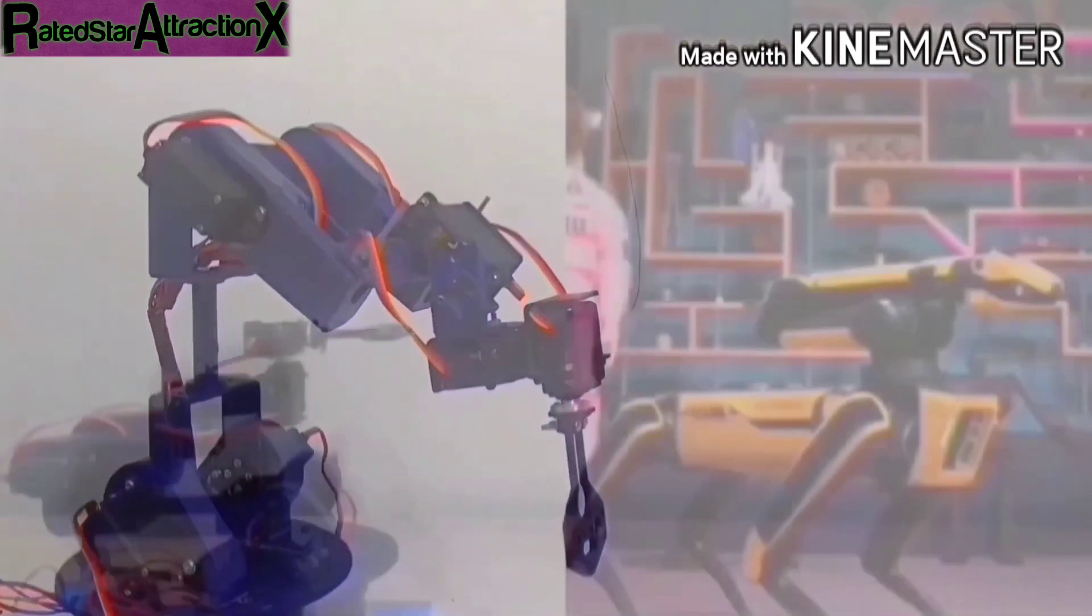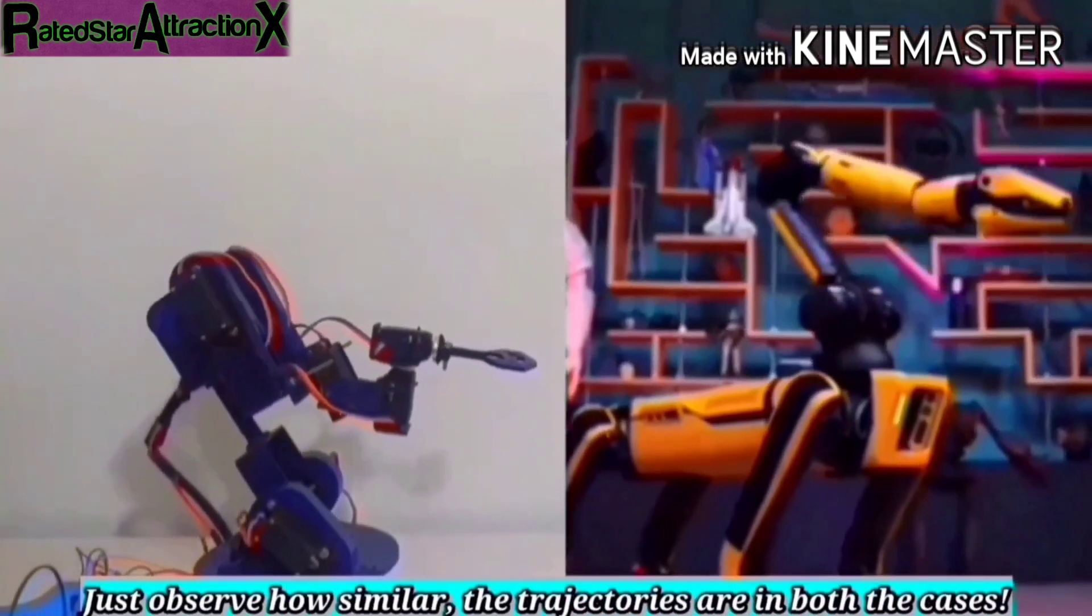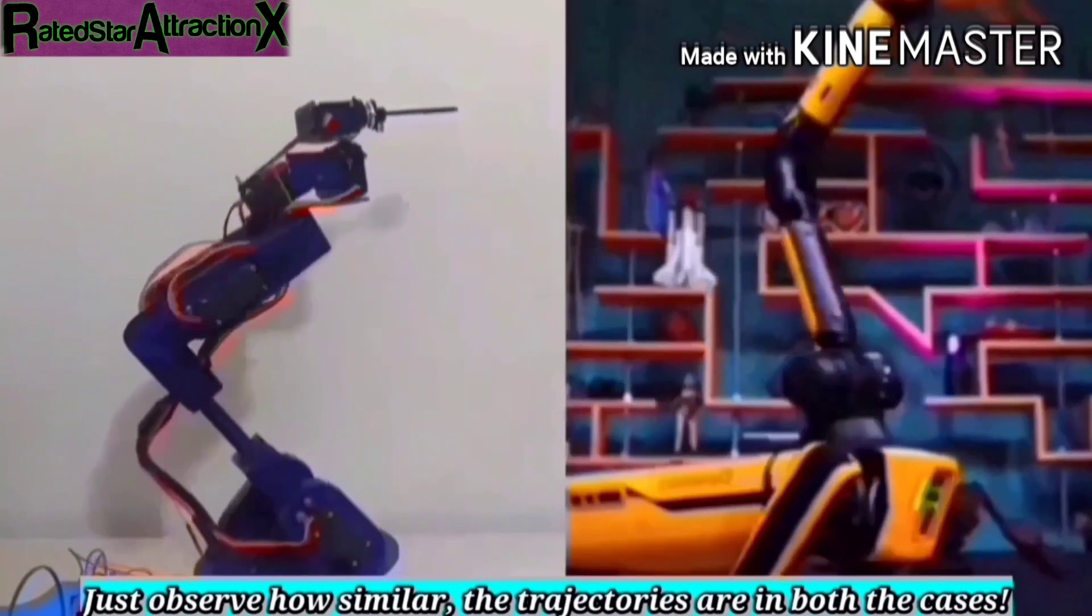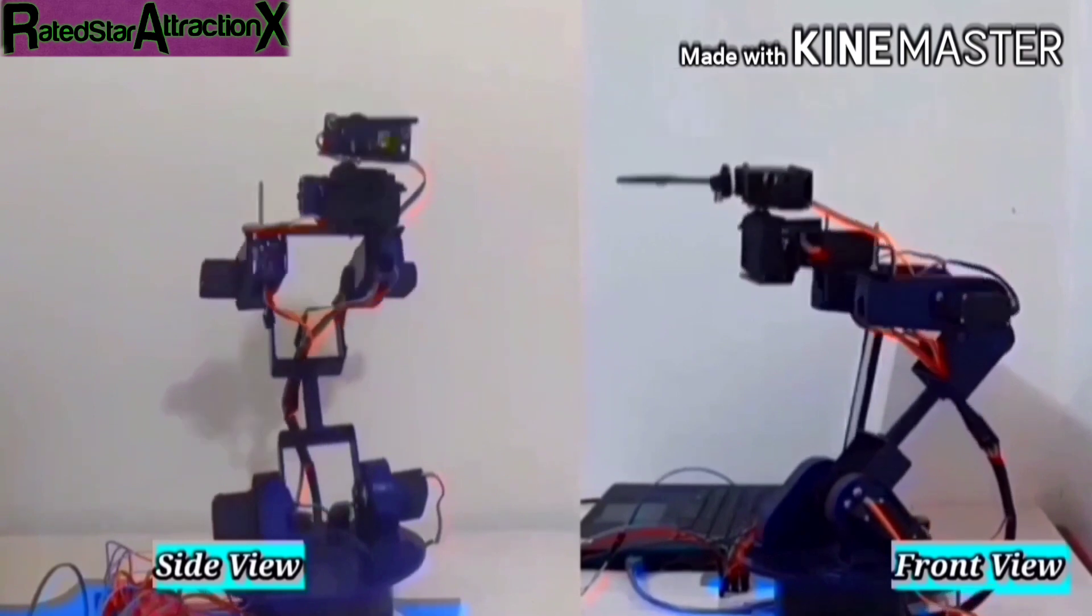Now see how similar motions both these arms execute in terms of the trajectory that their end effector follows and also the base rotation. Just try to feel the orientation of the end effector in three dimensional space.